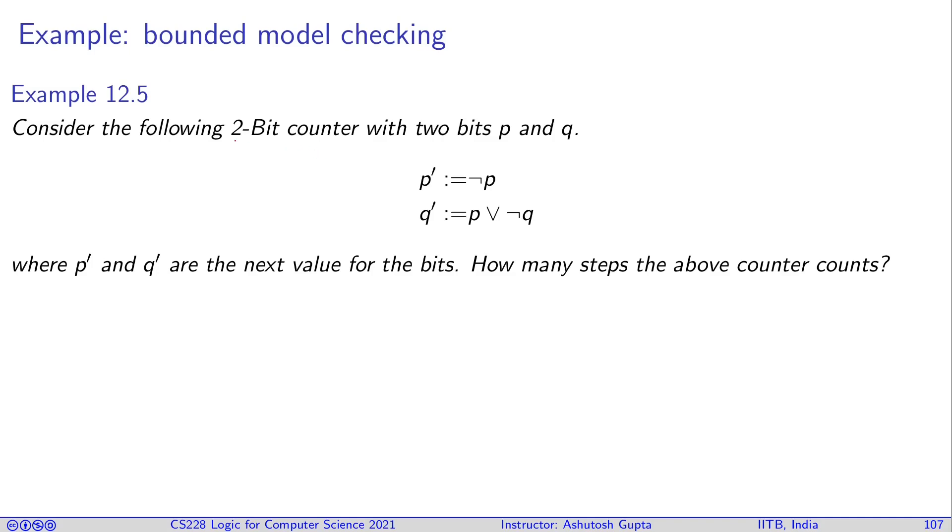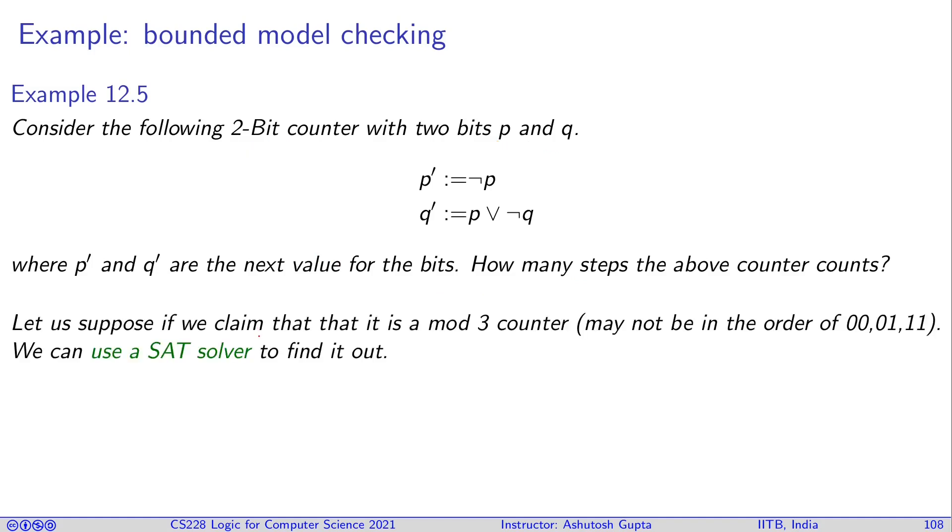Consider the following two-bit counter with two bits p and q. You have this transformation. Every time point you negate p, and q prime becomes p OR NOT q. The question is how many steps does the above counter count? Let us suppose if we claim that it is a mod 3 counter, we can use a SAT solver to find it out.